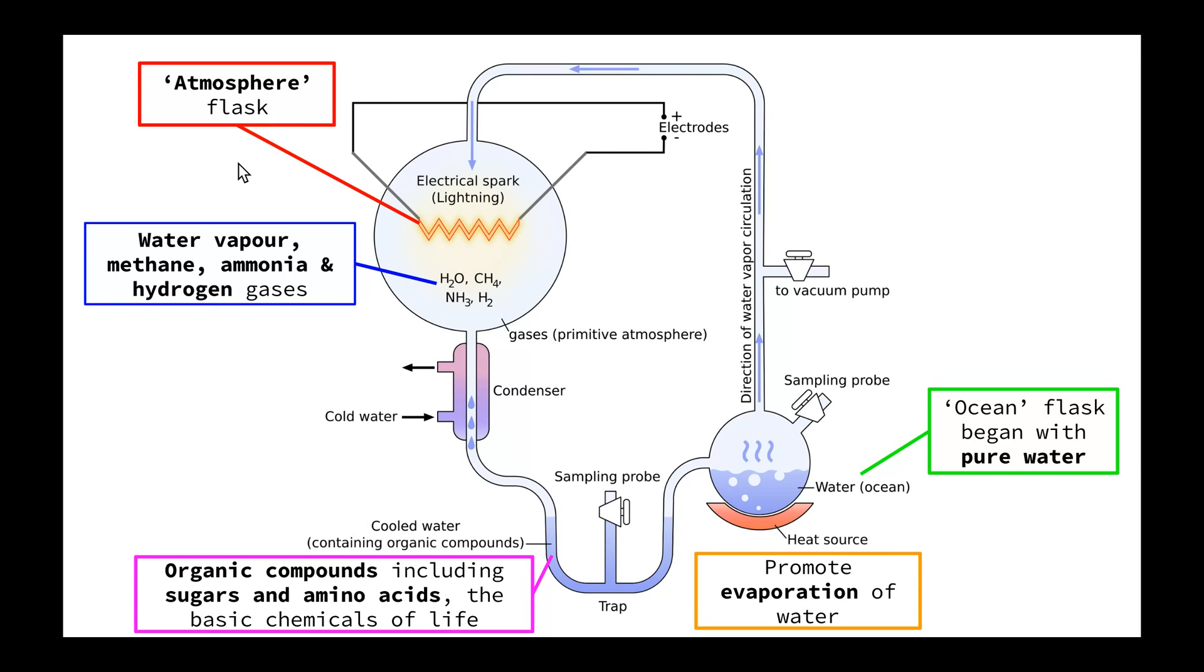Then what happened was, as those gases reacted, the gases then passed through this condenser. A condenser is a tube that is surrounded by cold water. And because the water is cold, the gases then condense back into a liquid form.